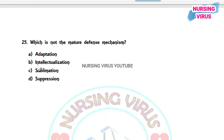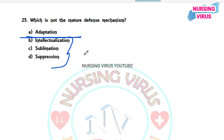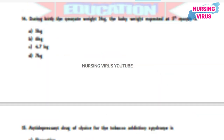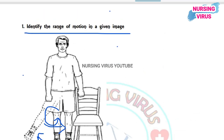Question 25: Which is not a mature defense mechanism? The options are adaptation, intellectualization, sublimation, and suppression. Intellectualization, sublimation, and suppression are all considered positive defense mechanisms, but adaptation is not even classified as a defense mechanism. These are the first 25 questions with rationale. The remaining questions will be covered in upcoming videos. If you know any questions with options or have any corrections, please type them in the comment box, as these are memory-based questions. Thanks for watching.